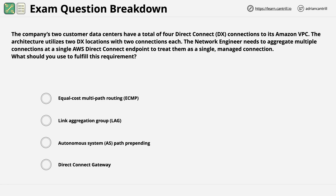Finally, Direct Connect or DX Gateway allows connections to multiple VPCs in multiple regions using a single private VIF, or alternatively, it allows connections to a transit gateway from Direct Connect using a transit VIF.